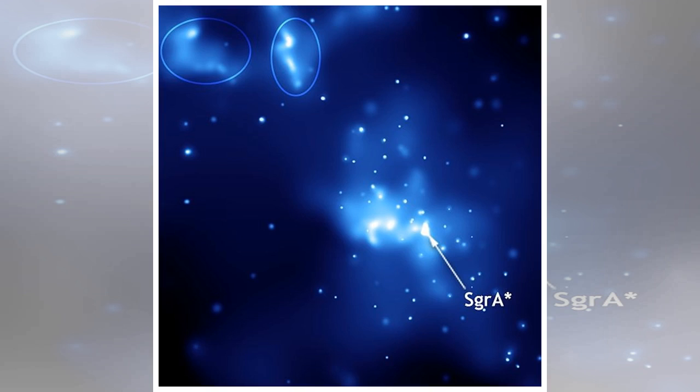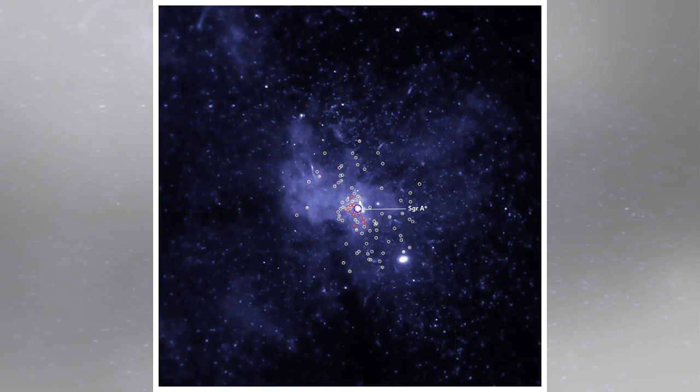Using this method, they detected 14 X-ray binaries within about 3 light-years of Sgr A*. Two X-ray sources likely to contain neutron stars based on the detection of characteristic outbursts in previous studies were then eliminated from the analysis. The dozen remaining X-ray binaries are identified in the labeled version of the image using red-colored circles.